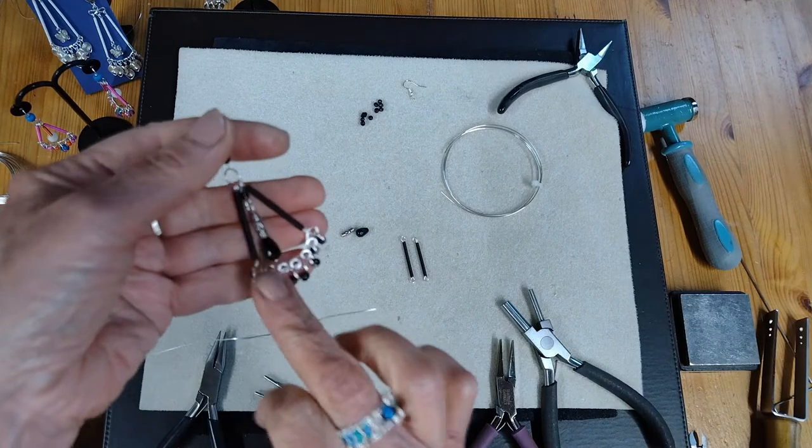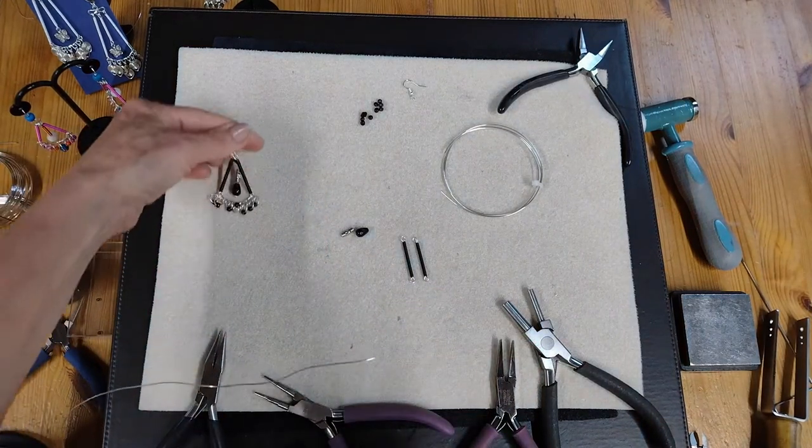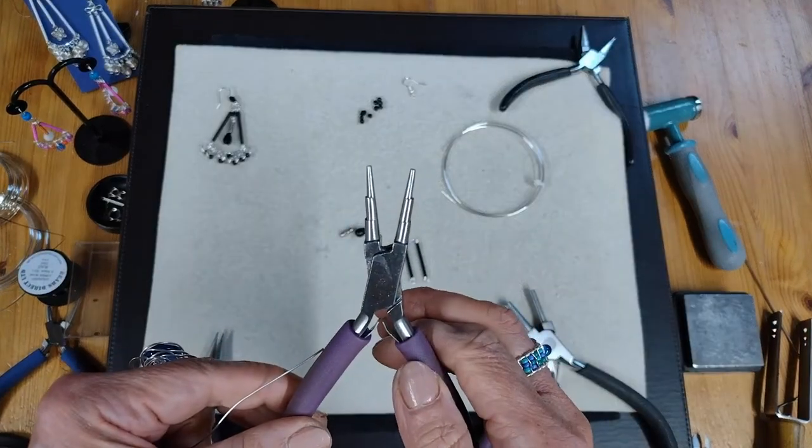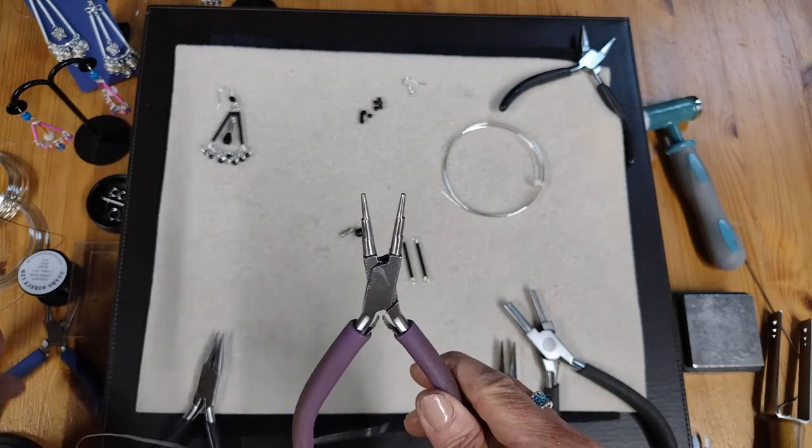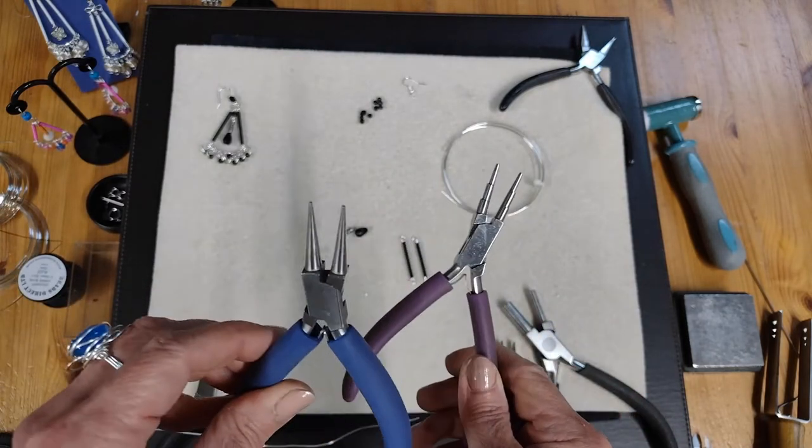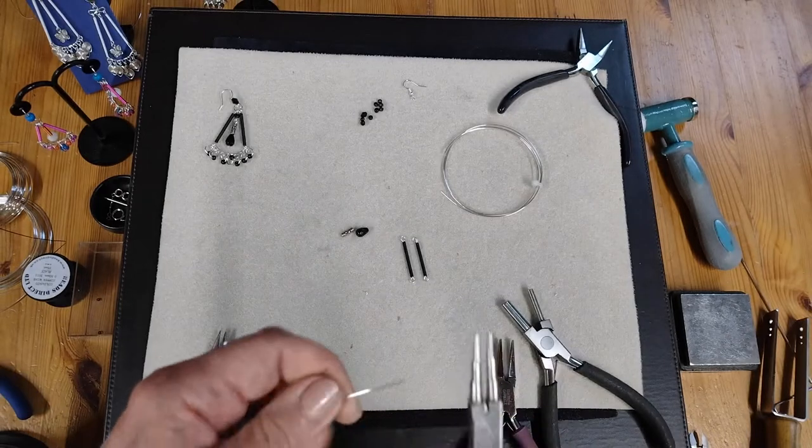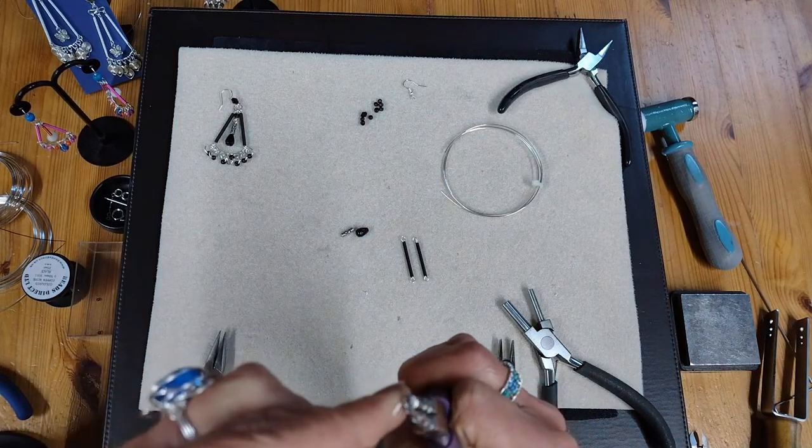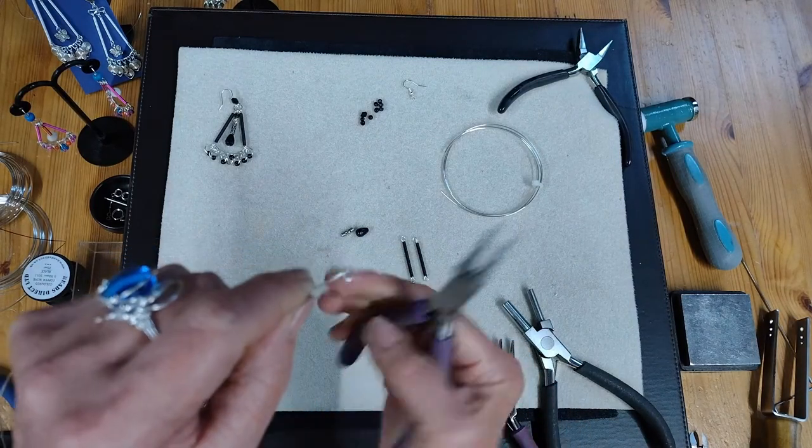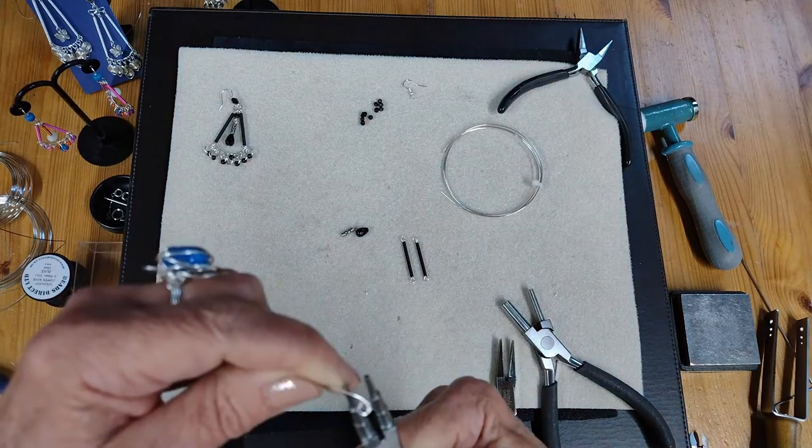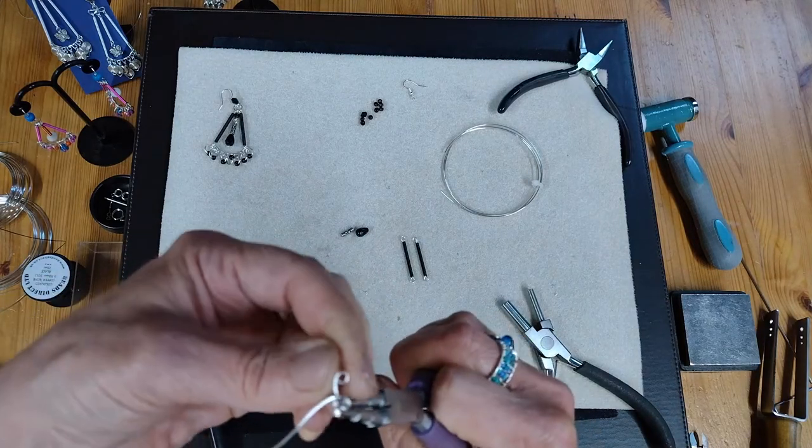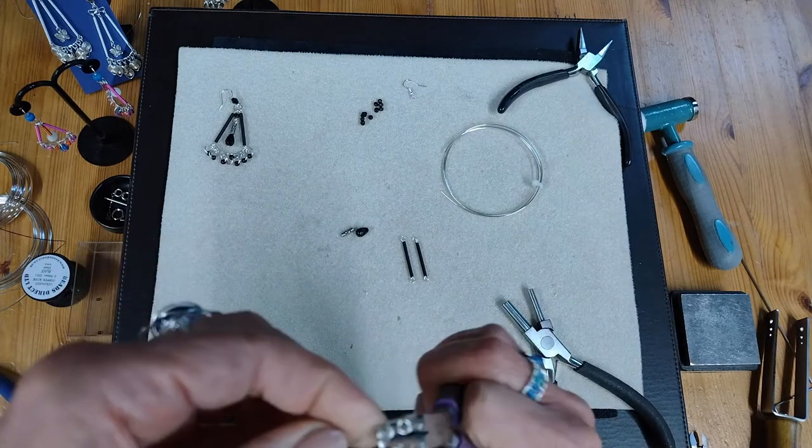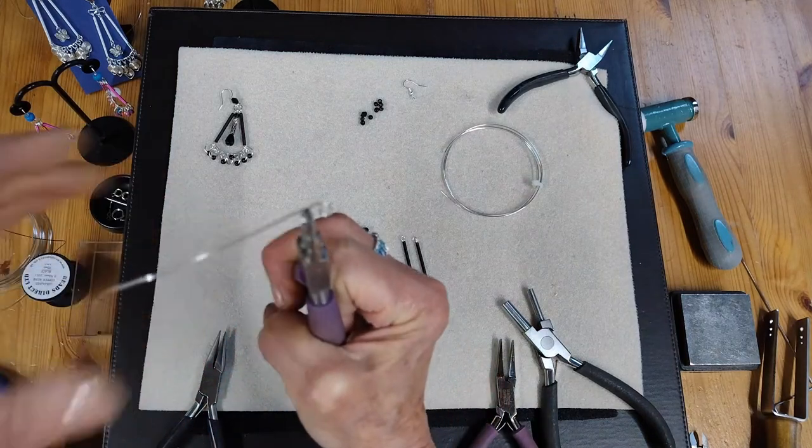So now I'm going to use my step pliers again, the smallest end, but equally use your round nose pliers for this if you don't have step pliers. I'm going to the end of the wire and I'm creating a small curl. So there's one curl. Then placing my pliers next to that curl and bringing it completely round again to create a second circle right next to it. I'm going to continue doing this to create seven circles in a row.